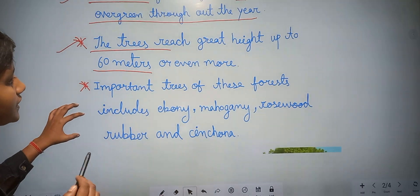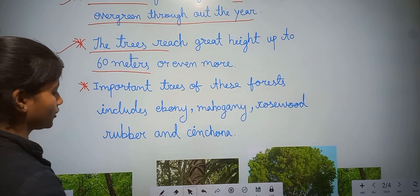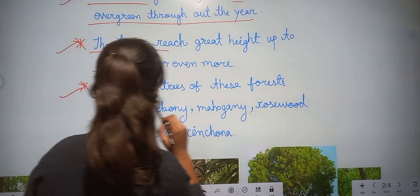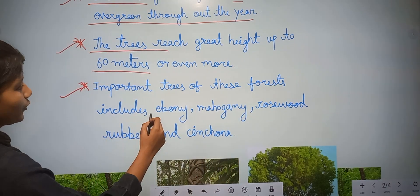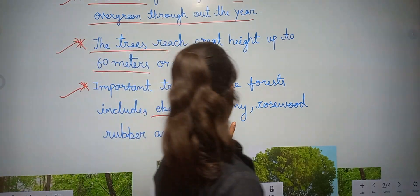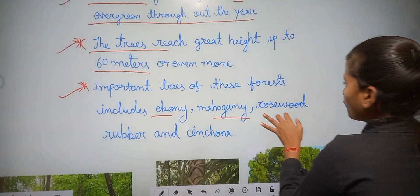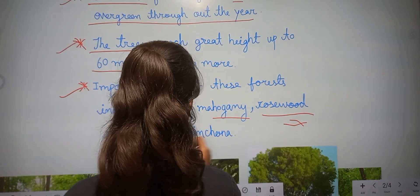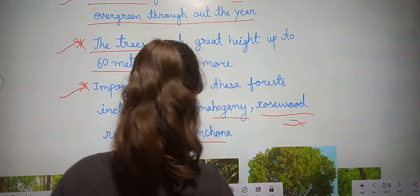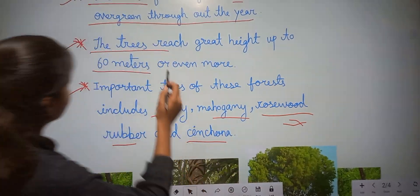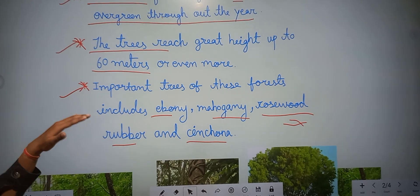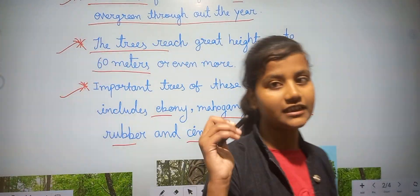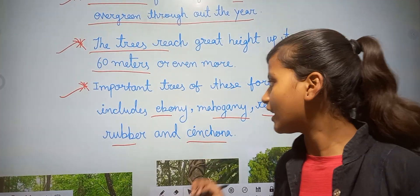Important trees of this forest include ebony, mahogany, rosewood, rubber, and cinchona.